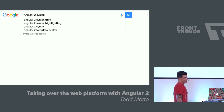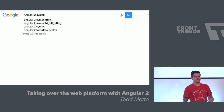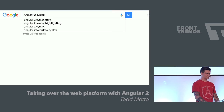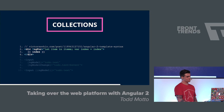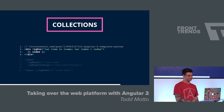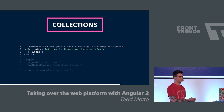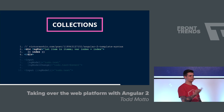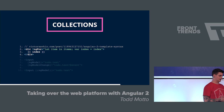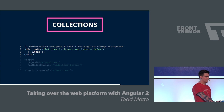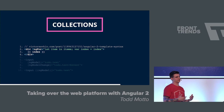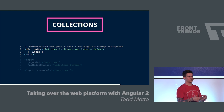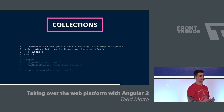I actually Googled this last night — if you type 'Angular 2 syntax', you get the word 'ugly' as the first result. Why might this be? Let's have a look at some crazy examples.